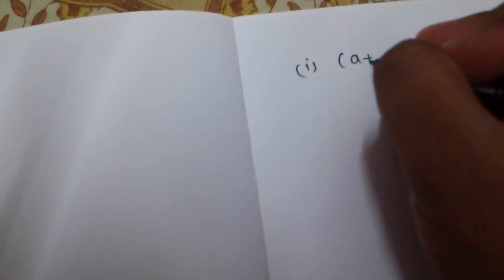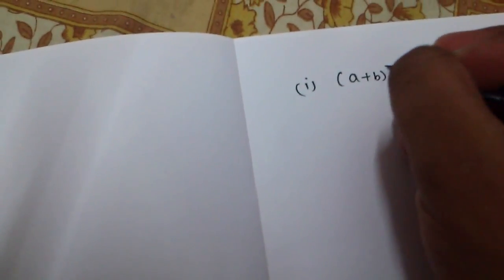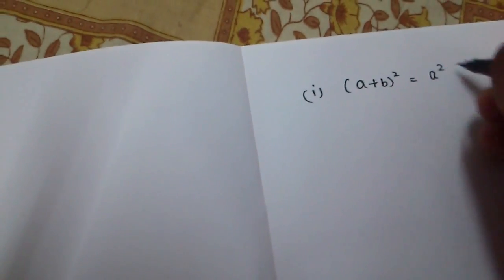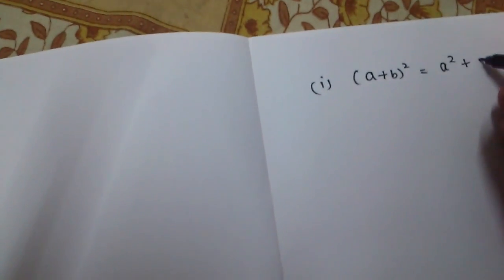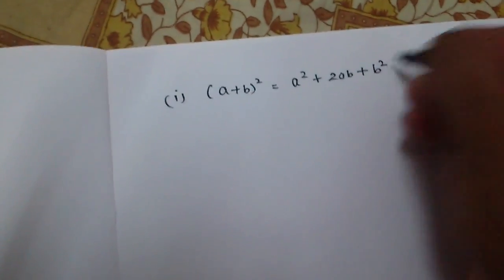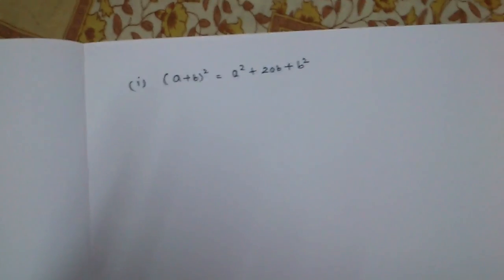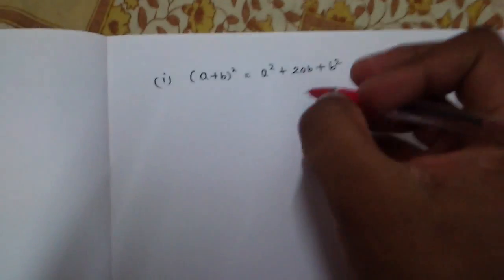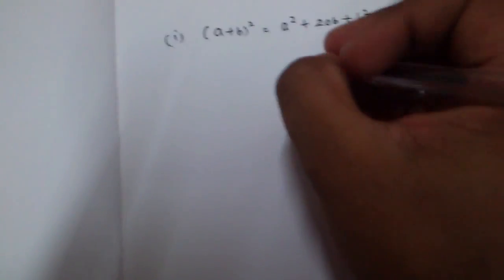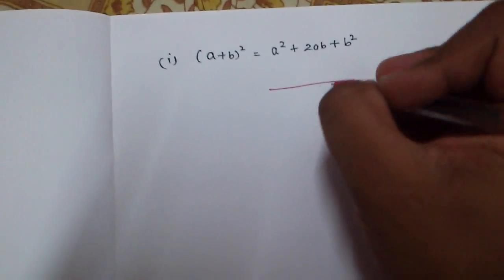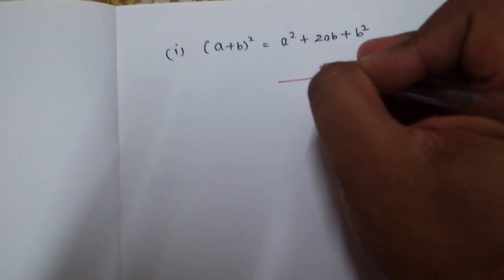The first identity is: (a + b)² = a² + 2ab + b². We will be proving this identity geometrically. For that, let us consider a line with length a.